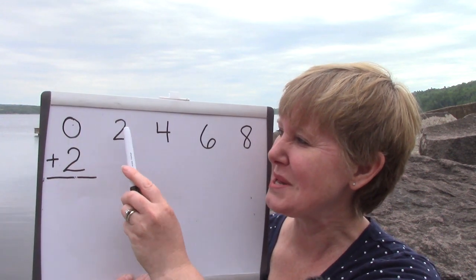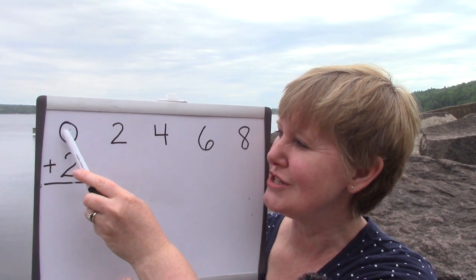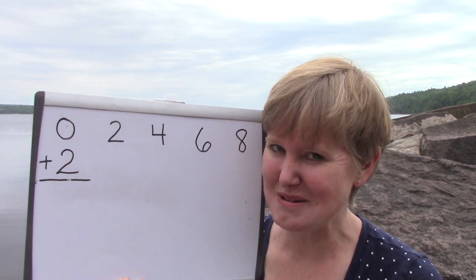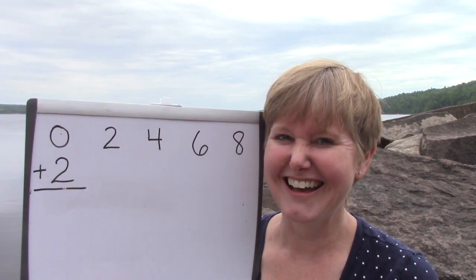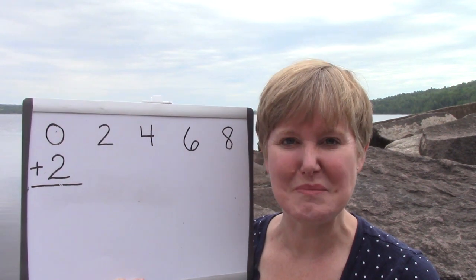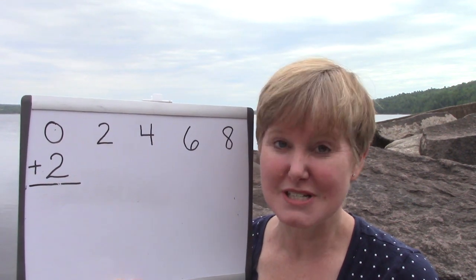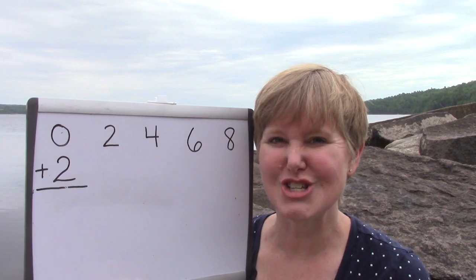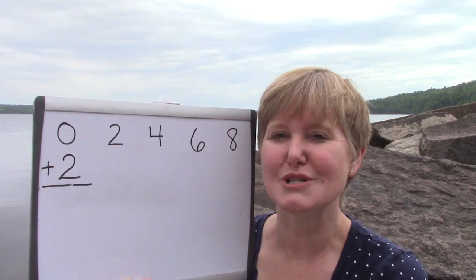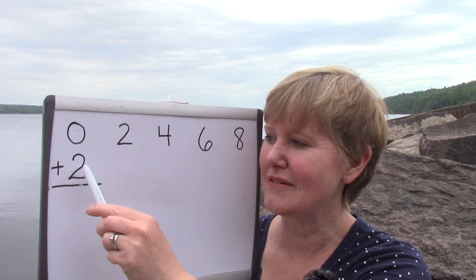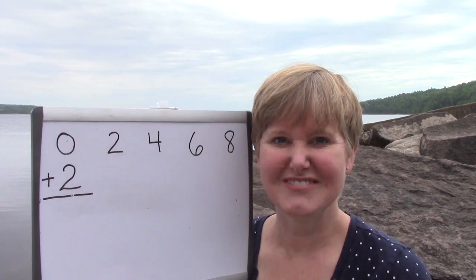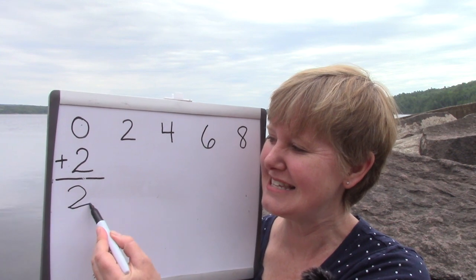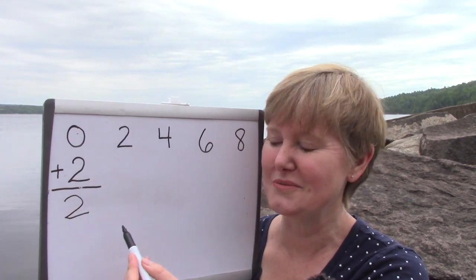I have some numbers up here: zero, two, four, six, eight. Do those numbers look familiar? What do we call these types of numbers? Did you remember that they're called even numbers? We are going to start off by adding two to some even numbers. Zero plus two — what is it? You're right, it is two. Zero plus two is two.